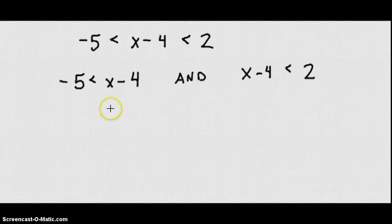Let's look at the example: negative 5 is less than x minus 4, which is also less than 2. And we want to solve for x. So we know that negative 5 has to be less than x minus 4, and x minus 4 has to be less than 2, because it lies between those two numbers.